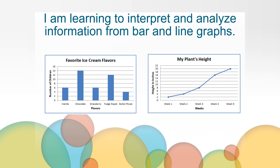Today, you will be learning to interpret and analyze information from bar and line graphs. On the screen, you can see a bar graph and a line graph. What does it mean to interpret and analyze them? It means that we will use them to get information and then think about what that information means.